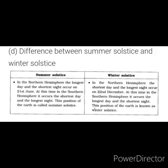Differentiate between summer solstice and winter solstice. Summer solstice: in the Northern Hemisphere, the longest day and shortest night occur on 21st June; at this time in the Southern Hemisphere, the shortest day and longest night occur. This position of the Earth is called the summer solstice. Winter solstice: in the Northern Hemisphere, the shortest day and longest night occur on 22nd December; at this time in the Southern Hemisphere, the longest day and shortest night occur. This position is called the winter solstice.